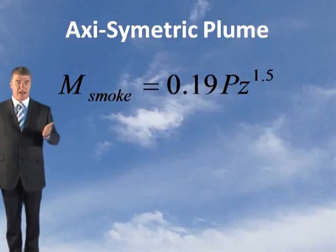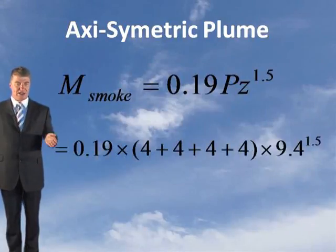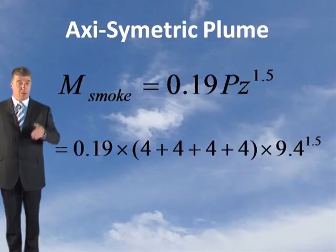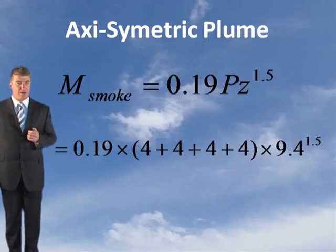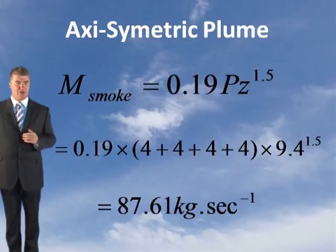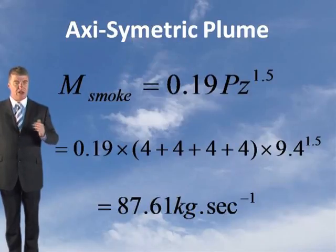So M_smoke equals 0.19 times the perimeter — which is 4 plus 4 plus 4 plus 4 — multiplied by the clear layer height of 9.4 to the power of 1.5. This gives you 87.61 kilograms per second.